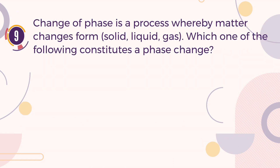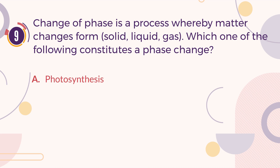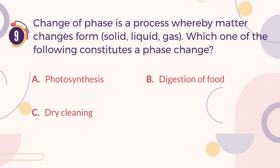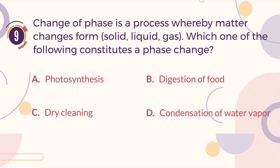Number 9. Change of phase is a process whereby matter changes form — solid, liquid, gas. Which one of the following constitutes a phase change? A. Photosynthesis. B. Digestion of food. C. Dry cleaning. D. Condensation of water vapor. The correct answer is D. Condensation of water vapor.